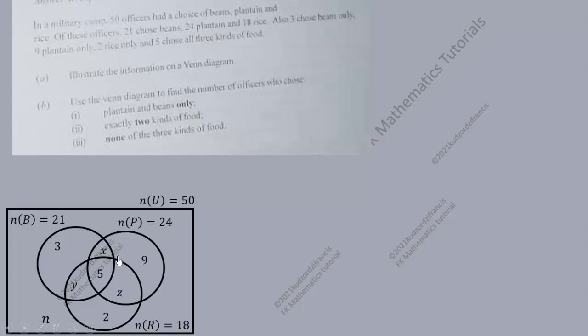Before we can do that, we have three variables, so we need to set up three equations in x, y, and z. We can use the beans circle, the plantain circle, and the rice circle to obtain the three equations. Starting with the beans circle: when we add all elements inside it we must get 21. So x plus y plus 3 plus 5 equals 21.